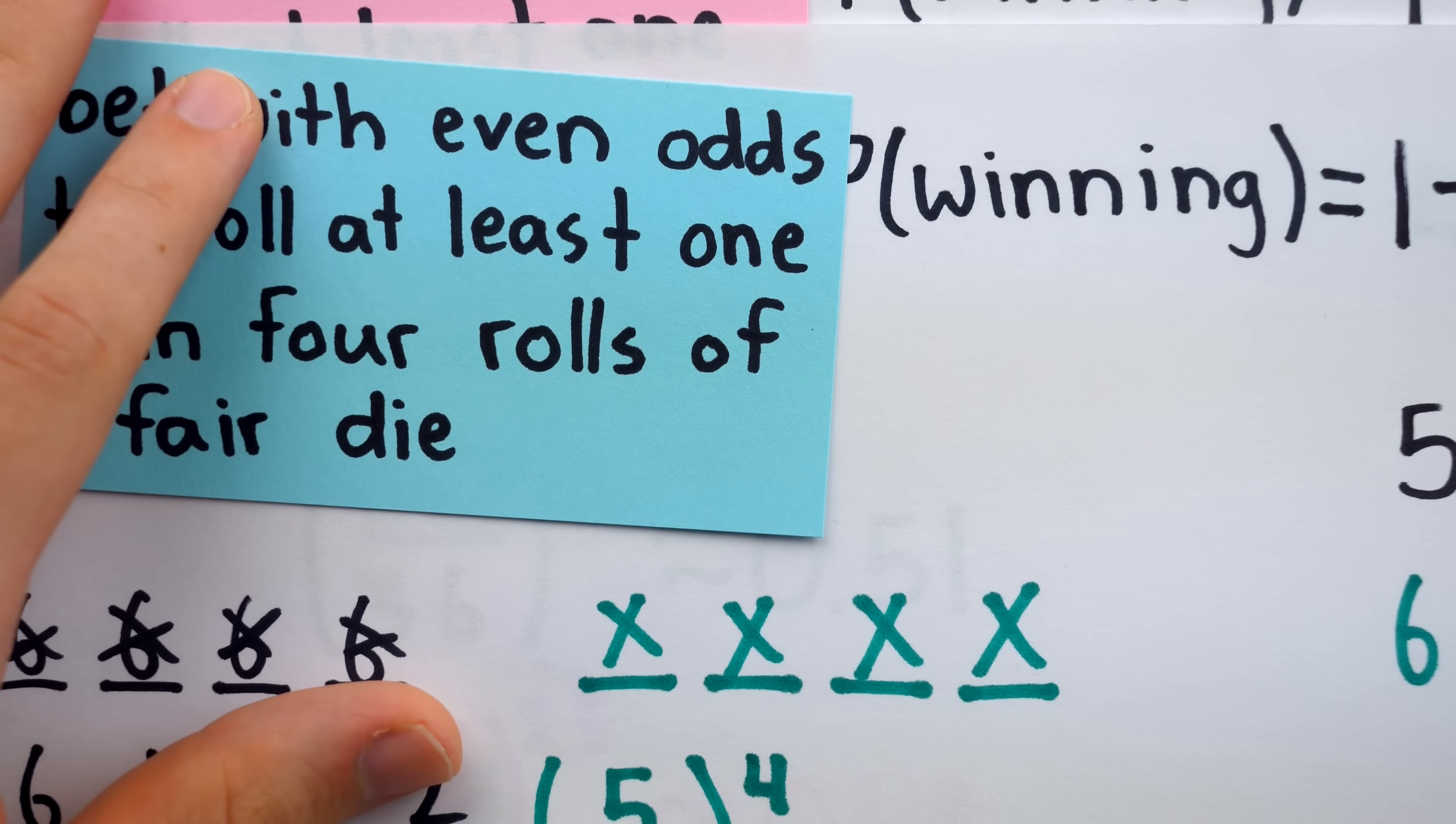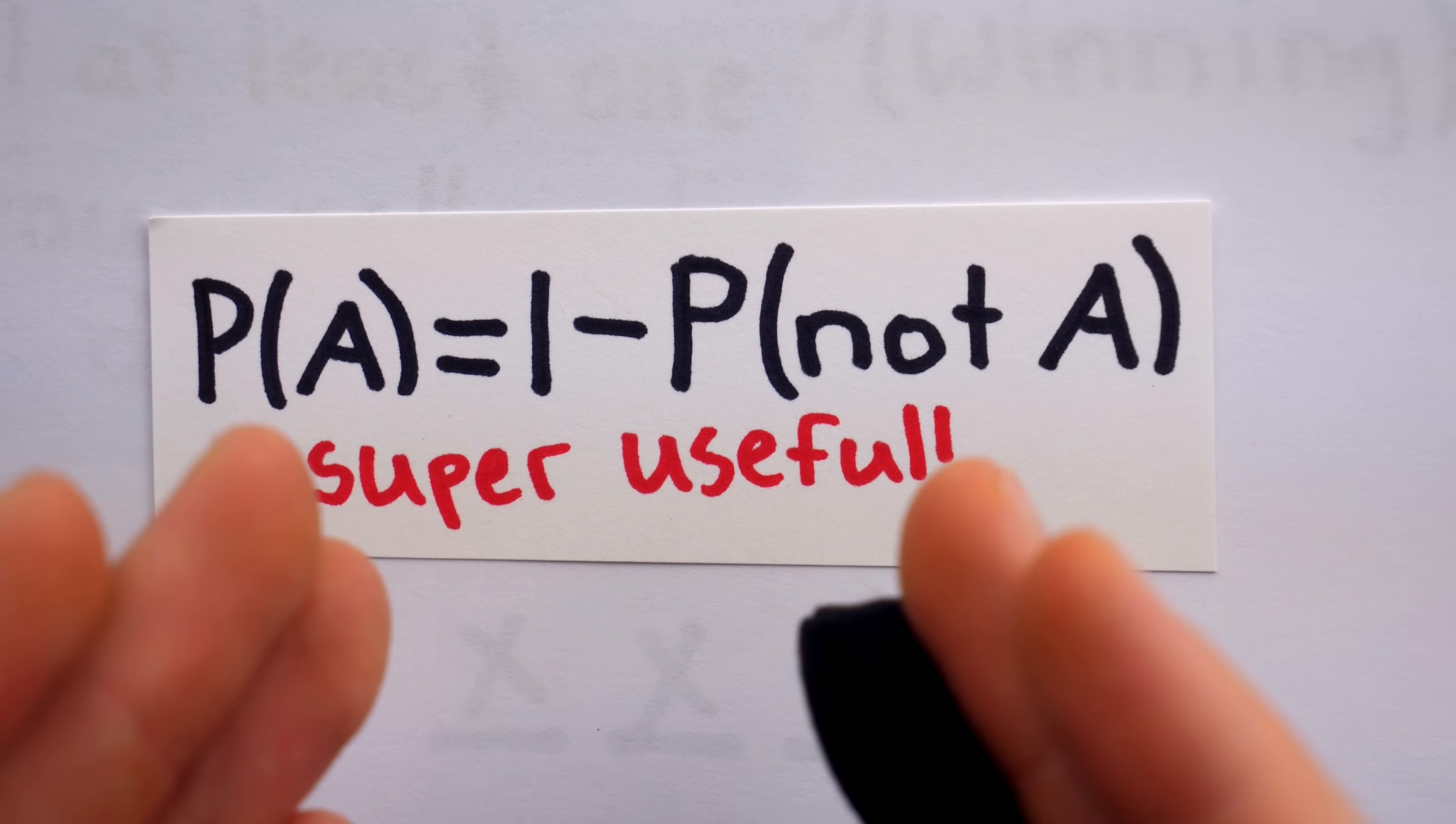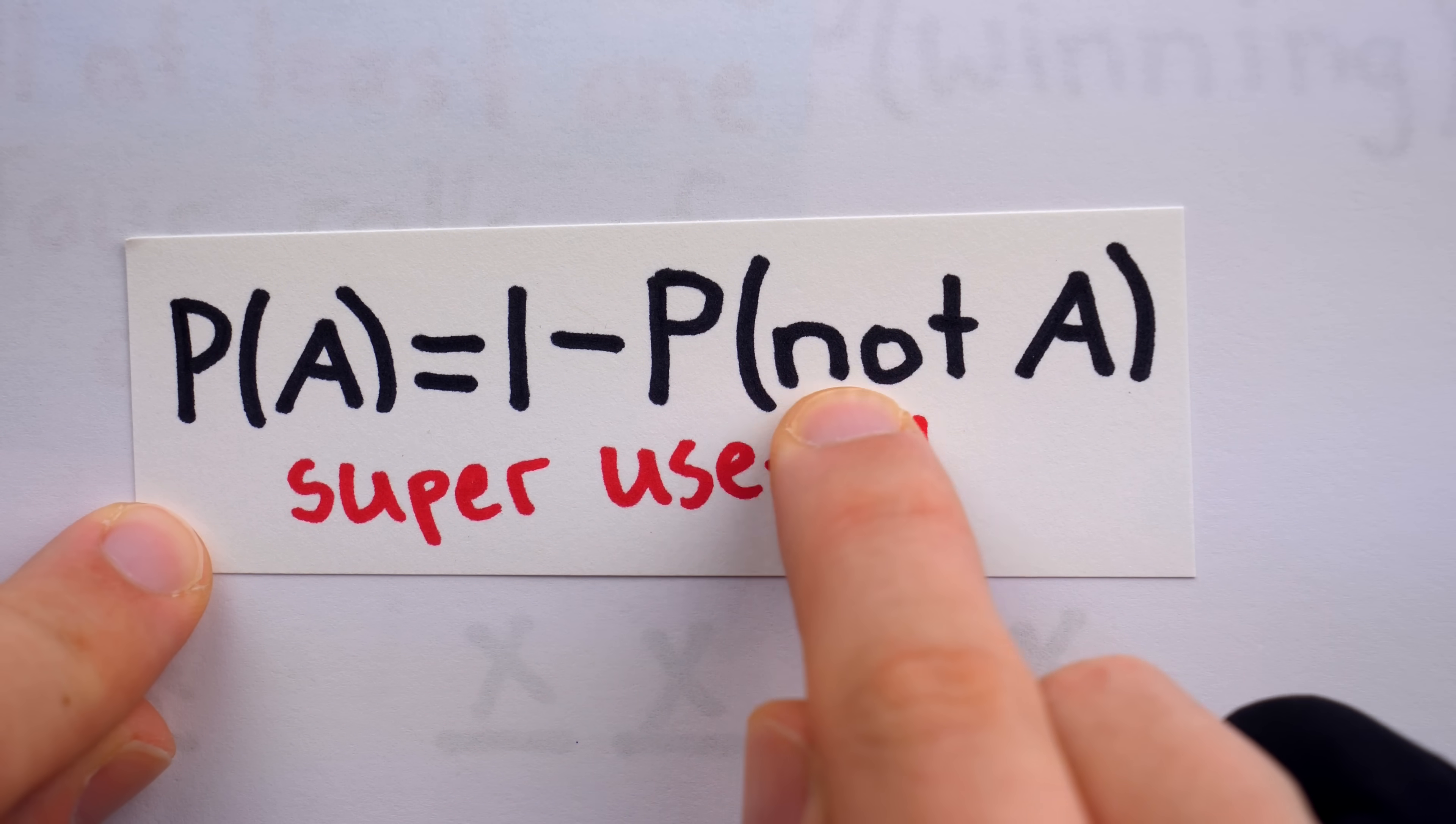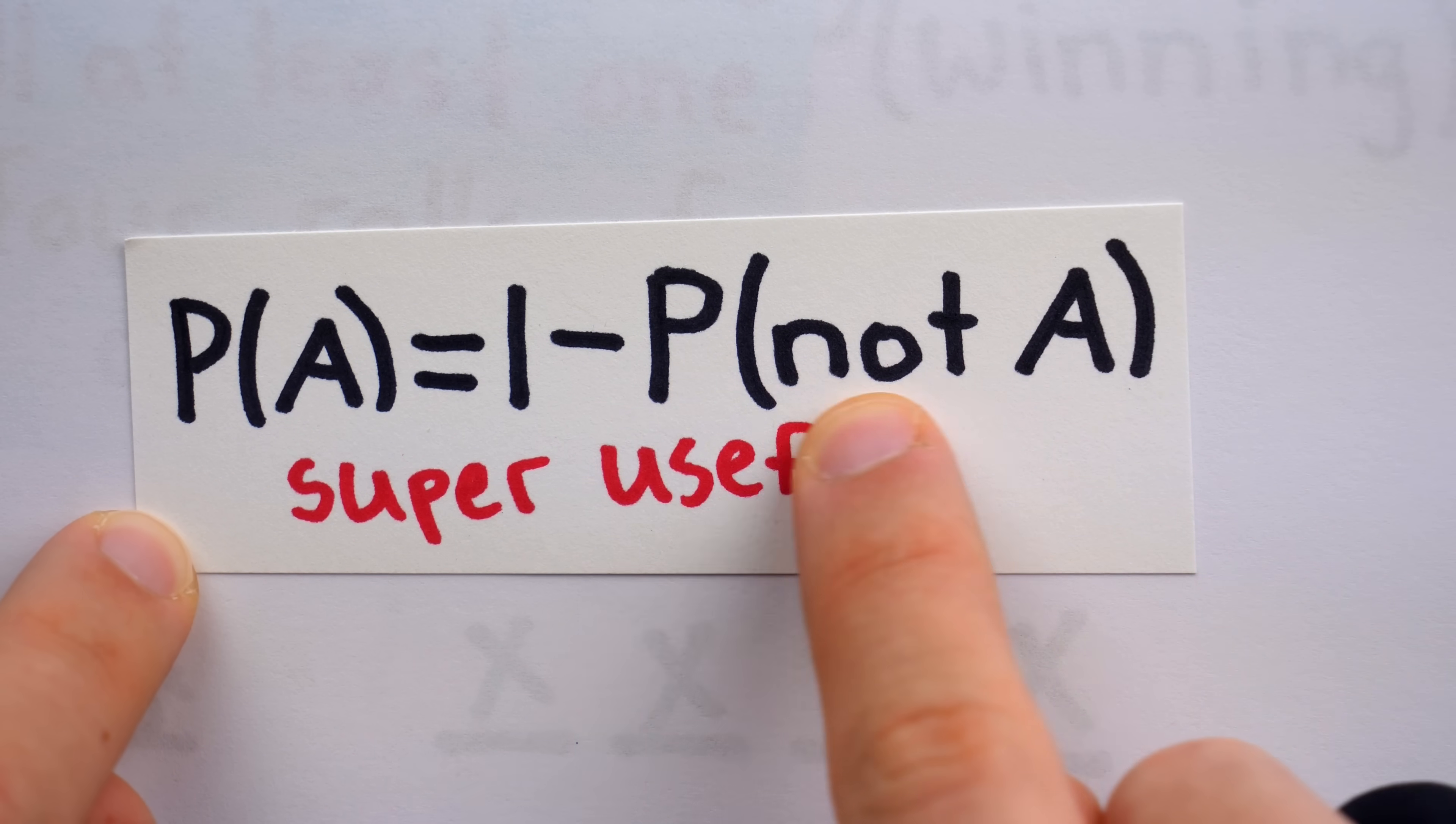If you're just beginning to study probability, there are a few important lessons to take away from Damiré's reckless gambling. Firstly, the law of complement can be super useful. Don't forget to use it. The probability of an event is 1 minus the probability of the event not occurring, and sometimes it's much more straightforward to calculate the probability of an event not happening.